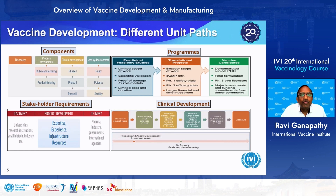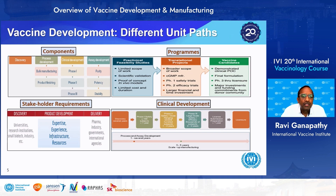Based on different components of vaccine development, it can be divided into four different sets of pathways. Based on components: discovery phase, process development phase, clinical development phase, and assay development phase. By program-based separation: preclinical feasibility studies, translational projects, final confirmation of proof of concept, phase-through licensure, and commercialization. By stakeholder requirements: discovery phase involving universities and small/large biotech; product development phase requiring expertise, experience, infrastructure, and resources; and the delivery phase where pharma industry, governments, and international agencies are involved.